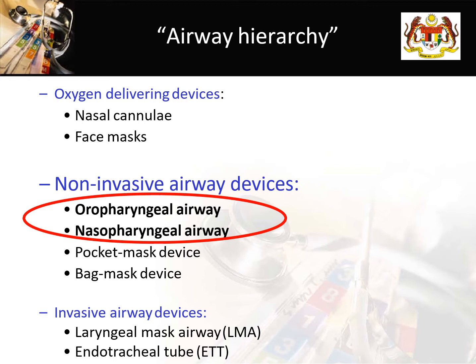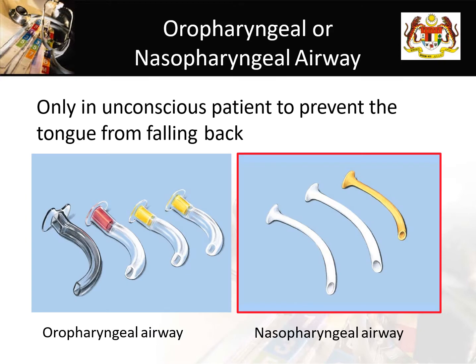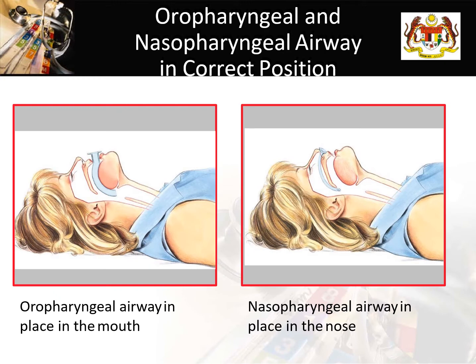Moving on to non-invasive airway devices, we have the oropharyngeal airway (OPA) and nasopharyngeal airway (NPA). OPA can be used only in an unconscious patient with no gag reflex, to prevent the tongue from falling back and maintain the airway open. NPA can be used in a semi-conscious patient, but must be avoided in traumatic patients with suspected basal skull fracture. To size the OPA, measure from the middle of the incisors to the angle of the mandible, or from the angle of the mouth to the tragus of the ear. For the NPA, measure from the tip of the nose to the tragus of the ear.